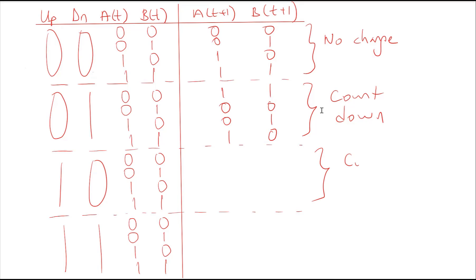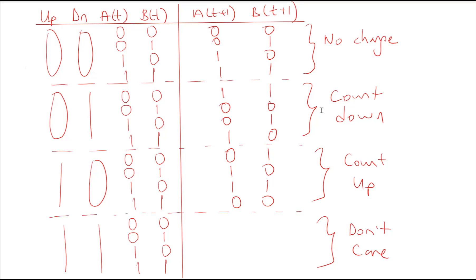If up is 1 and down is 0, we will be counting up. From state 0,0 we go to 0,1. From 0,1 we go to 1,0. From 1,0 we go to 1,1. And from 1,1 we go to 0,0. In the last section where up and down are both 1, this is not possible, so this is our don't-care section — we have X's here.